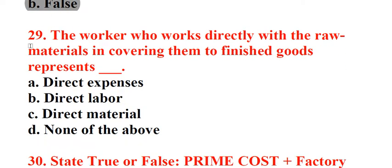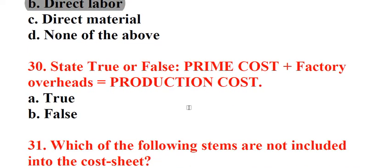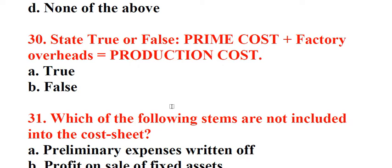Question 29: The worker who works directly with the raw materials in converting them to finished goods represents underscore. A. Direct expenses, B. Direct labor, C. Direct material, D. None of the above. Answer: B. Direct labor. Question 30: State true or false. Prime cost plus factory overheads equals production cost. A. True, B. False. Answer: B. False.